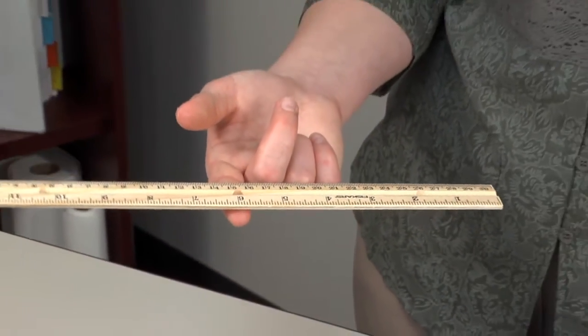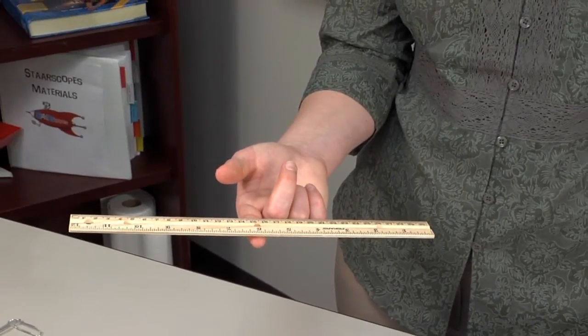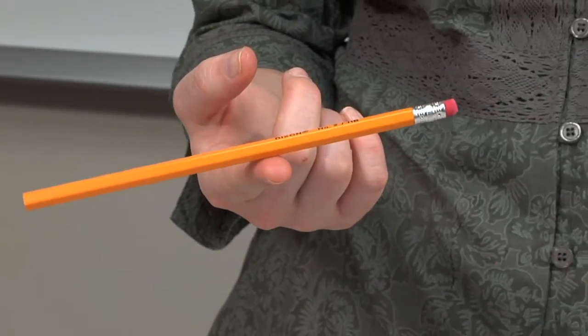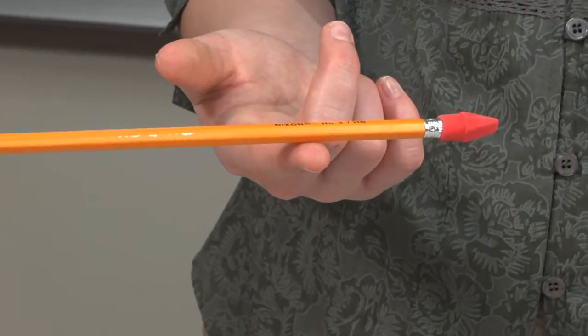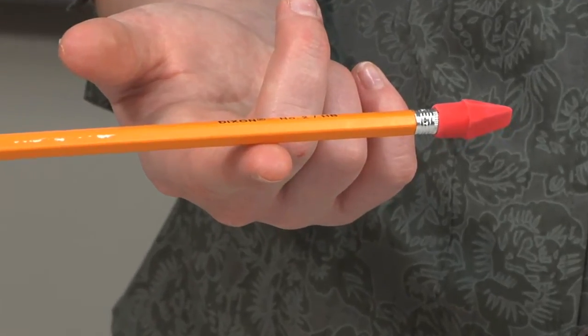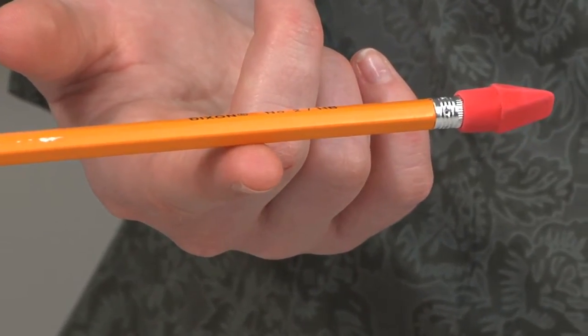For the first test, balance a ruler on the end of a finger. Next, try a pencil. Now add an eraser to the pencil. Watch how the center of gravity shifts toward the heaviest area of the balanced object.